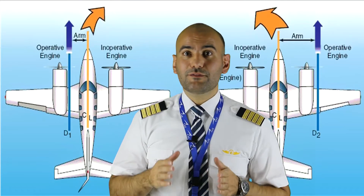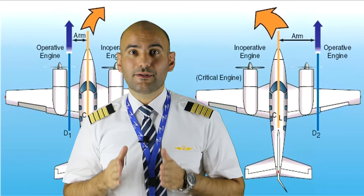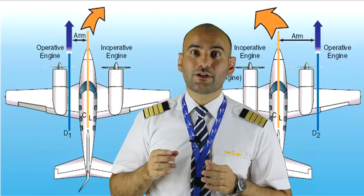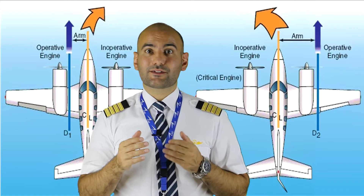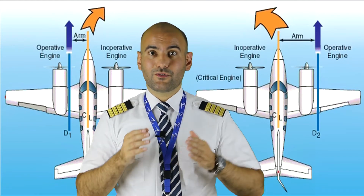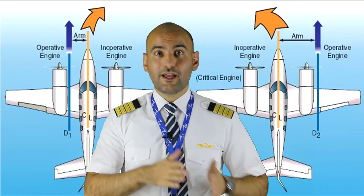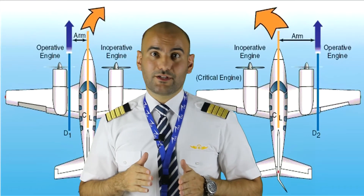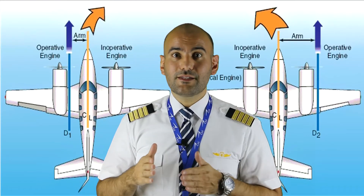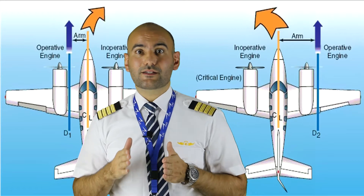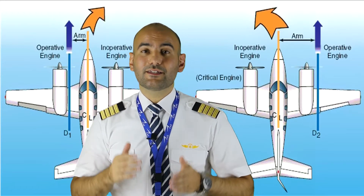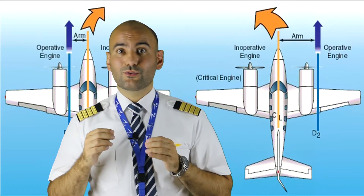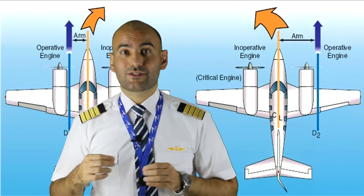When one of the engines on a typical multi-engine aircraft becomes inoperative, a thrust imbalance exists between the operating and inoperative side of the aircraft. This thrust imbalance causes several negative effects in addition to the loss of one engine's thrust.